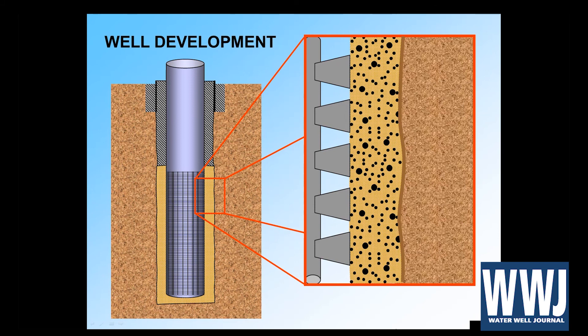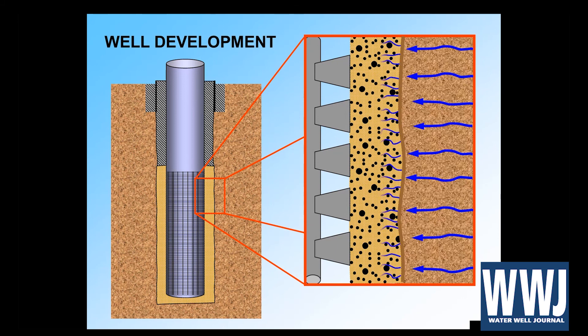Every type of drilling produces some wall cake — there is no way to drill a well without it. When we drill that hole in the ground, we have to get the cuttings out, which means applying positive pressure. If it's a friable or alluvial formation, it's liable to cave in, so we have to hold it open. These activities cause the wall cake, which impedes groundwater flow so that the water flowing to the well can't make it in. The name of the game is to get rid of that wall cake so we can get the full flow of the well.